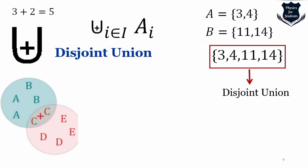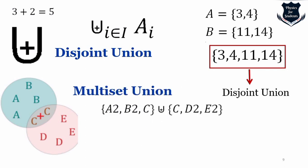Furthermore, if we have elements A, B, C, D, E in sets, we can perform a multiset union — adding two A's, two B's, C, D, and E — resulting in A², B², C², D², E². This is a multiset union where the plus sign inside a large U is used.